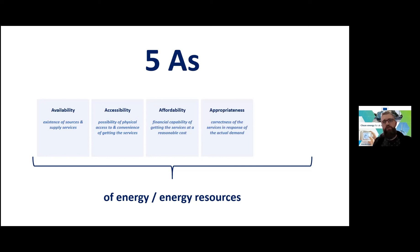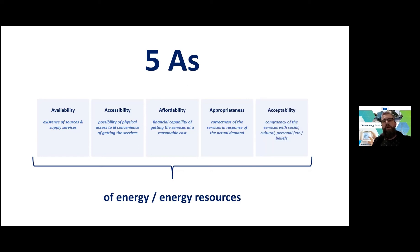For example, I buy a lot of electricity-consuming devices and we all use many of them. So my connection point has to be much stronger — the connection capacity has to be much stronger — and I need to get that because I need my fourth A, which is appropriateness. The fifth A is acceptability, which is the most personal requirement in this regard.